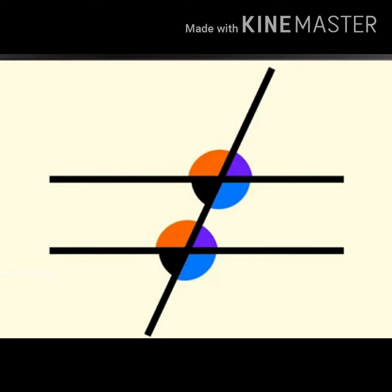Here, in this picture, the four pairs of corresponding angles are colored: blue color, violet color, orange color, and black color. They are the same.